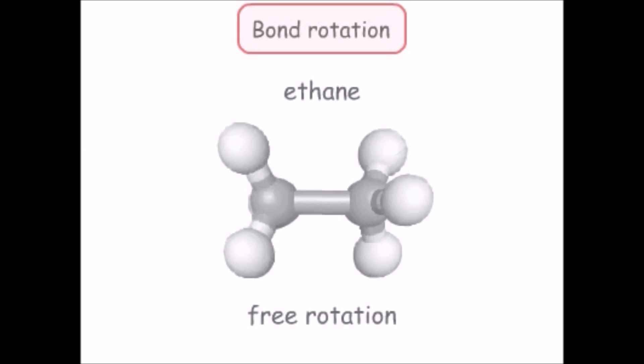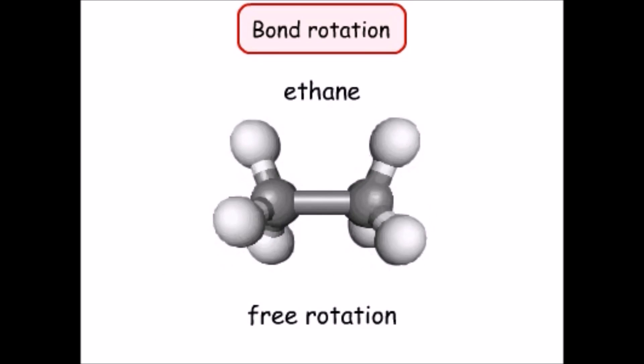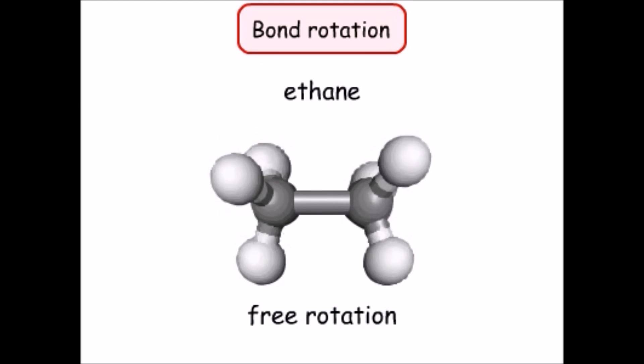Finally, we saw that atoms that are joined by just a sigma bond are able to freely rotate about the bond, such as the two carbons in ethane.